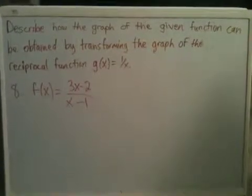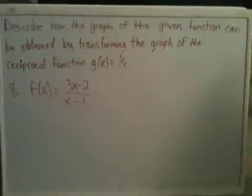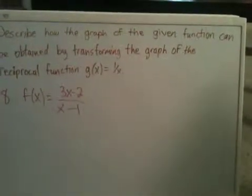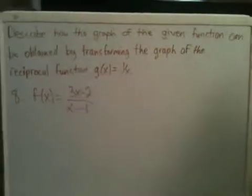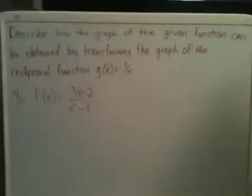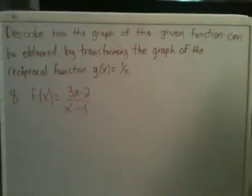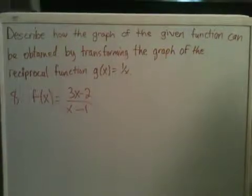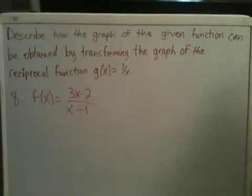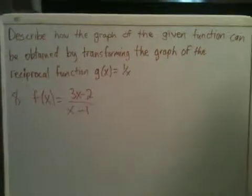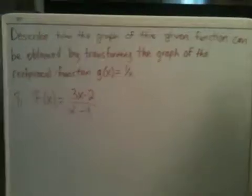All right, let's look at the next section of homework. We talked about in a video, the first section, how to find the domain and how to use limits to describe the behavior close to the values excluded from the domain. So now let's talk about how to do the next section, which says describe how the graph of the given function can be obtained by transforming the graph of the reciprocal function g(x) = 1/x.